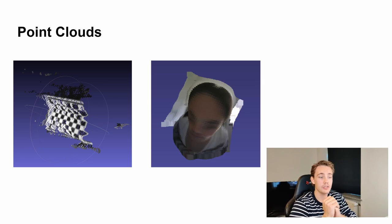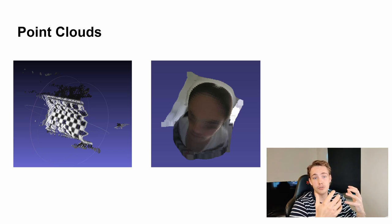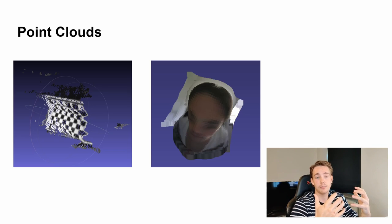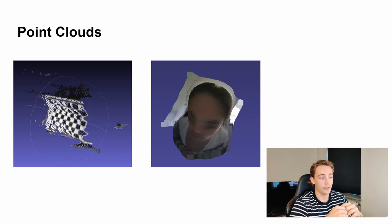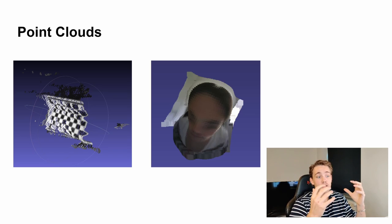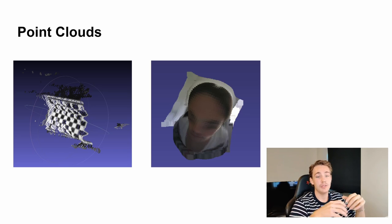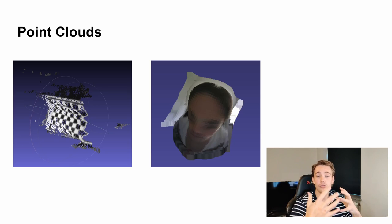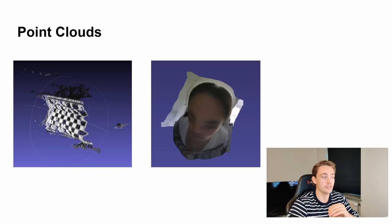As we can see in these images, the left image is constructed using stereo vision and the right one using deep learning. Point clouds are actually really messy data structures, and we need to post-process them to be able to use them in real-life applications.